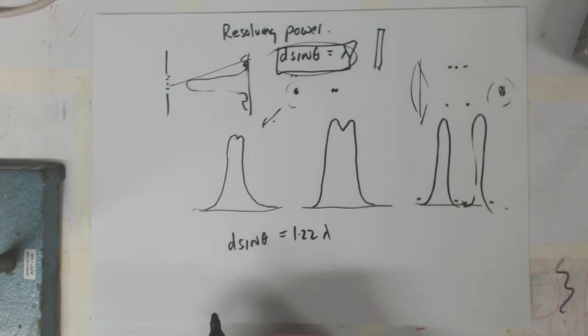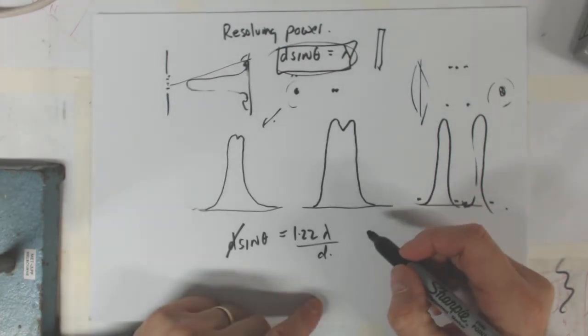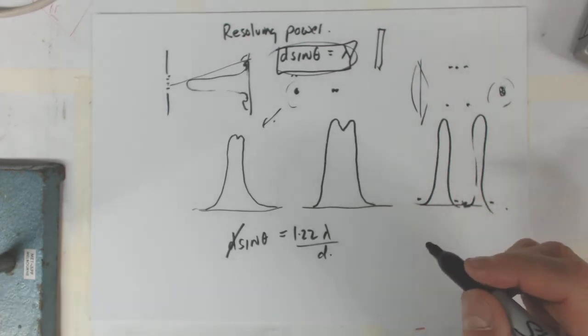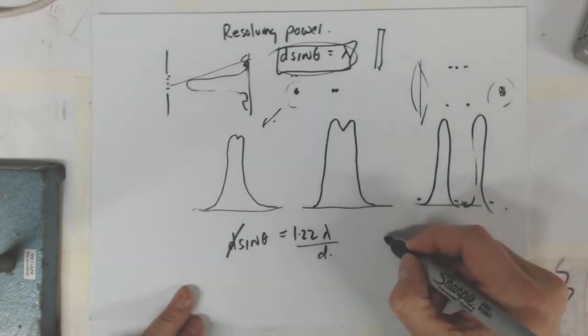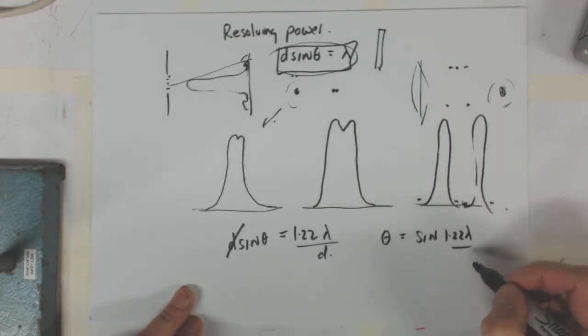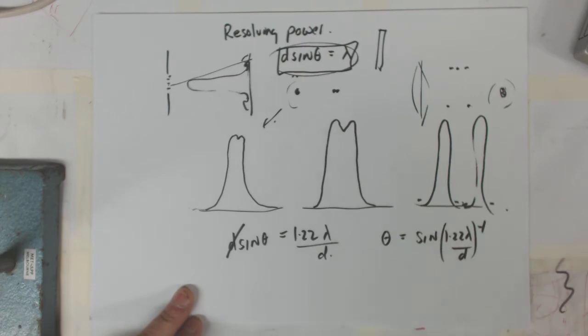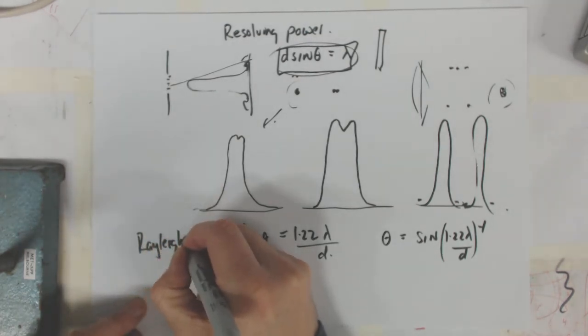And so we can say sine theta just equals that. So if we're looking at the two sources and we want to know our ability to resolve them, then we can say that the angle is going to be equal to, it's got a name, the angle is going to be equal to the inverse, so the angle is going to be equal to the inverse of 1.22 wavelengths over d to minus 1. It's the inverse sine. That's the angular separation for those two objects. That's called Rayleigh's criterion.